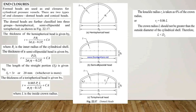The thickness of the torispherical head is given by T = 0.885·P·L / (σT·η − 0.1P) + Ca, where L is the inside crown radius. The knuckle radius Ri is taken as 6% of the crown radius, that is Ri = 0.06·L, where L is the crown radius which should not be greater than the outside diameter of the cylindrical shell. Therefore, L is always less than the outer diameter of the shell.